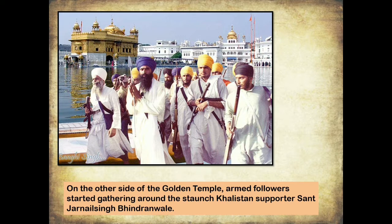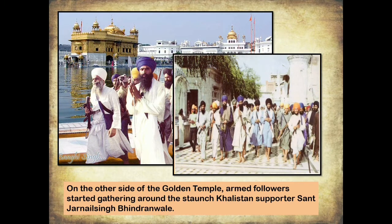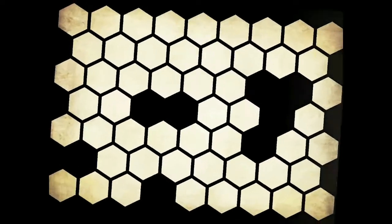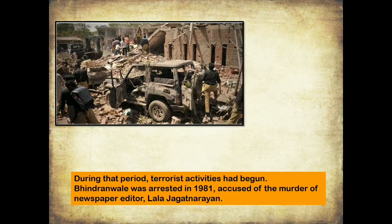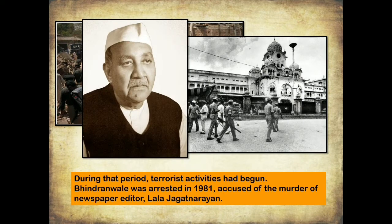Armed followers began gathering around staunch Khalistan supporters including Jarnail Singh Bhindranwale. Terrorist activities had begun by 1980, and Bhindranwale was arrested in 1981, accused of the murder of newspaper editor Lala Jagat Narayan. Narayan had published articles highlighting Bhindranwale's activities and emphasizing that the Golden Temple, as a place of purity and peace, should only be used for worship.